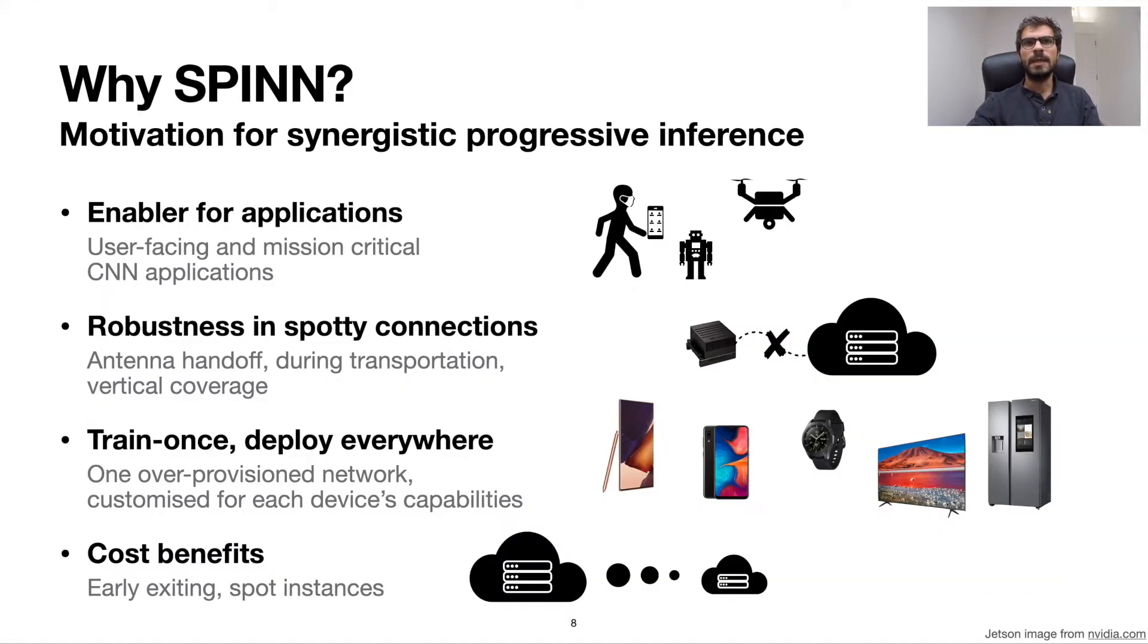Thus, SPIN can act as an enabler for real-time and latency-critical applications, for various tasks, ranging from background detection in conference calls on user smartphones, to vision tasks on robots and drones. Moreover, it can offer robustness under spotty network connectivity, avoiding catastrophic deterioration of the quality of experience when the remote endpoint becomes unavailable. Additionally, SPIN can support a heterogeneous ecosystem of devices, with one adaptive network architecture. Last, it can lead to significant cloud cost benefits by minimizing cloud usage, or enabling the usage of ephemeral spare cloud resources at a fraction of a price.